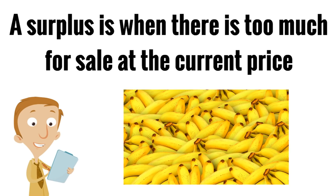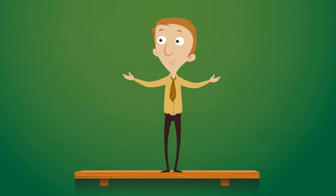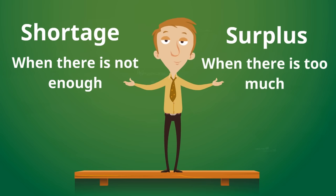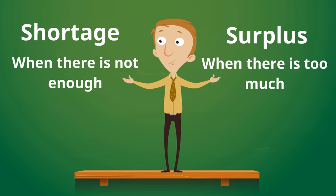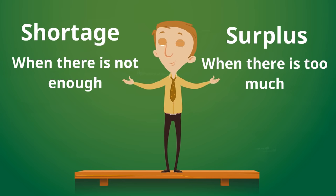These bananas are all ripe and they're ready to turn. They need to get sold quickly to different families and people that want to eat the bananas. But a surplus is when you have too much for sale — there are too many bananas. Another way of putting it: a shortage is when there's not enough, and a surplus is when there is too much. Stores and sellers want to make sure they're right in the middle — no shortage, but no surplus either.